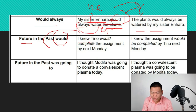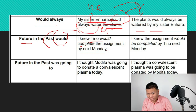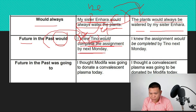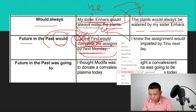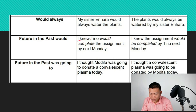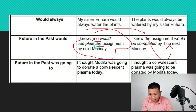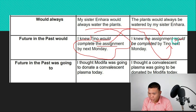For future in the past using 'would': 'I knew Tino would complete the assignment by next Monday.' This is a complex sentence. We focus on the dependent clause: 'Tino would complete the assignment by next Monday.' 'Assignment' becomes the subject. We keep 'would' and add 'be' plus past participle: 'I knew the assignment would be completed by Tino by next Monday.' For future in the past using 'was going to': 'I thought Modifa was going to donate a convalescent plasma today.' Converting: 'A convalescent plasma was going to be donated by Modifa today.'